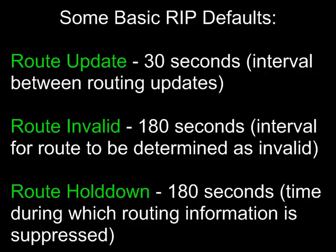Here are some basic default RIP timers. The route update takes place every 30 seconds and is the interval between routing updates. Route invalid takes place every 180 seconds and is the interval for a route to be determined as invalid. The route hold-on is also 180 seconds, which is the time during which routing information is suppressed.